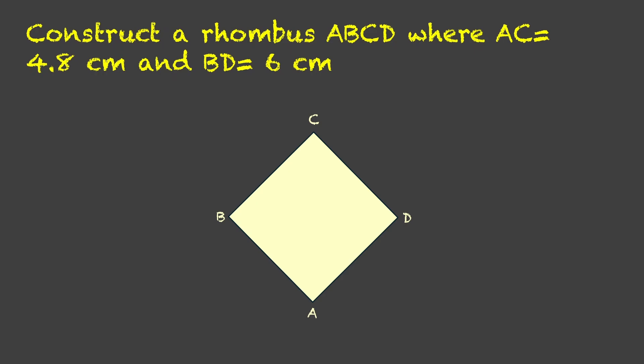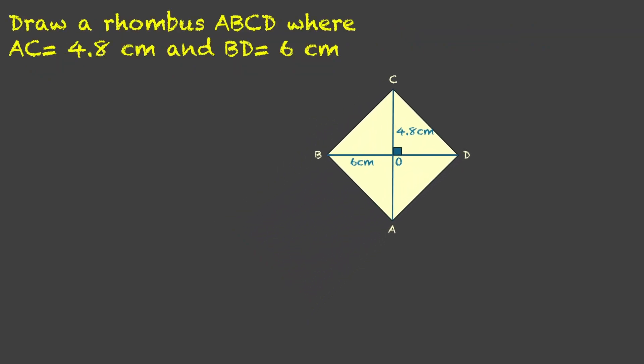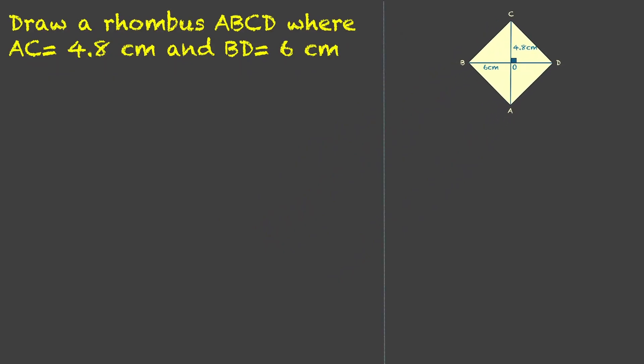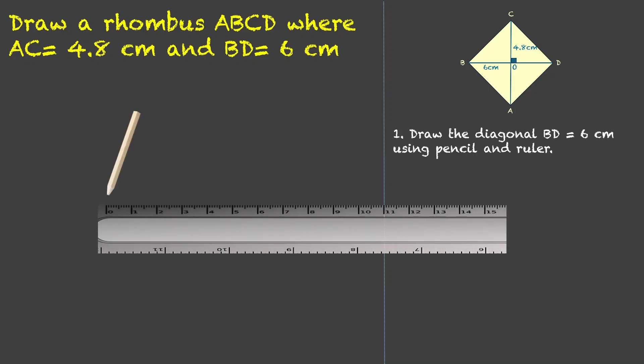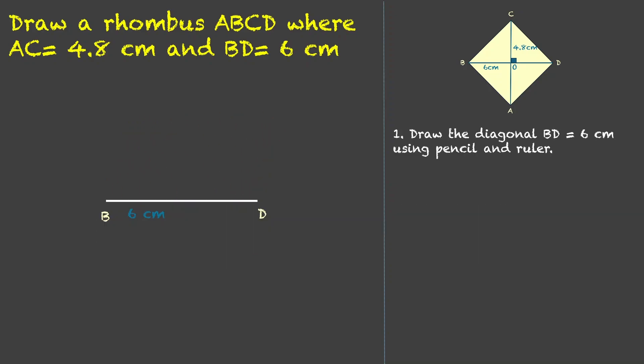Let us draw the rough diagram. We have the rhombus ABCD, where AC is one of the diagonals which is 4.8, and BD is the other diagonal which is 6 centimeters. Since we are only given the diagonals, we would be using one of these as the base. We can choose AC or BD — let us choose BD. We draw the diagonal BD of 6 centimeters using pencil and ruler. We make a line of 6 centimeters and this is our BD.